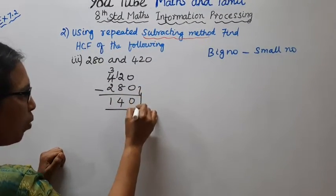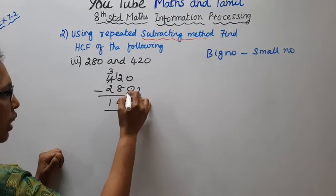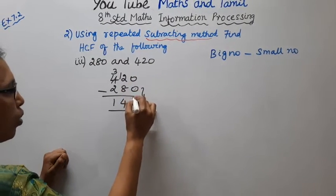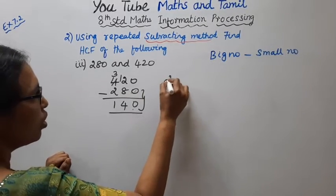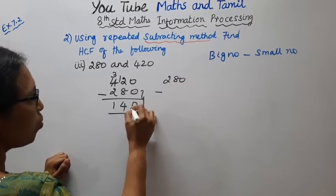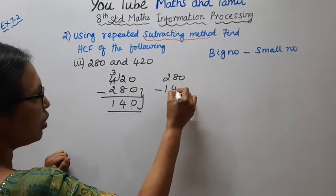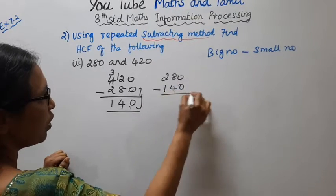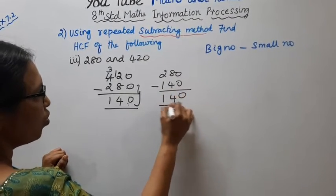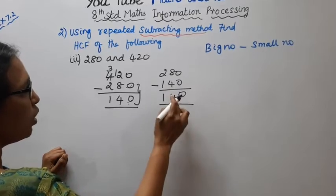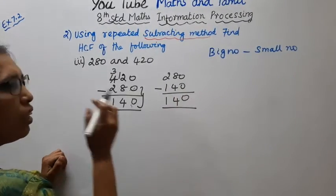Now, 280 is the next number. 280 minus the small number 140, equals 140. Then 140 minus 140, equals 0.